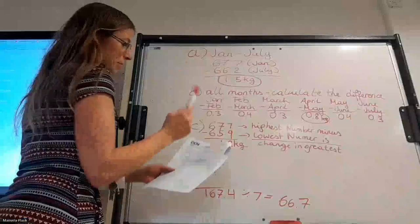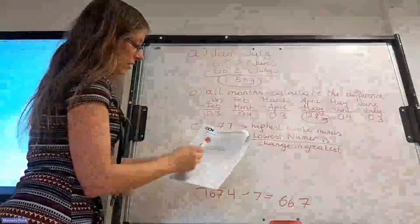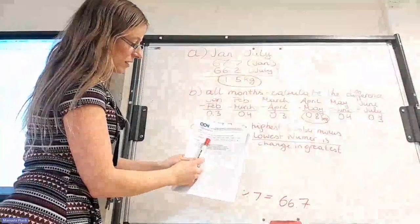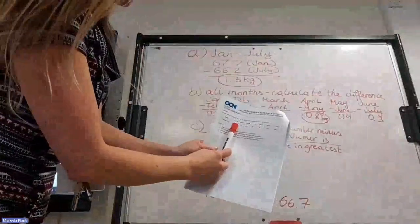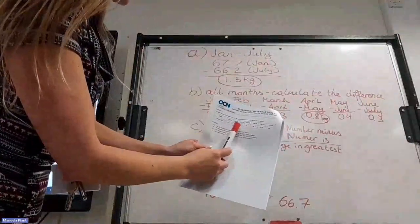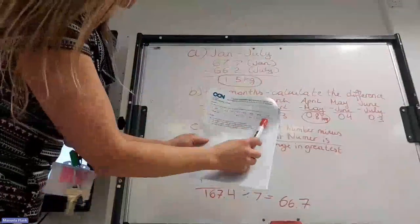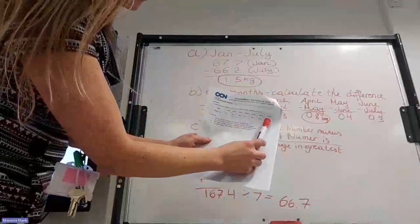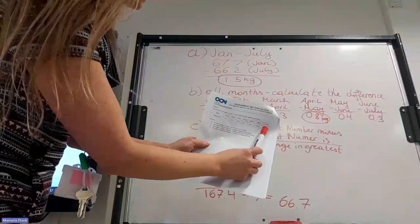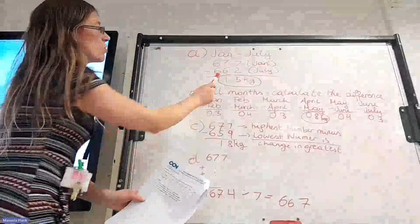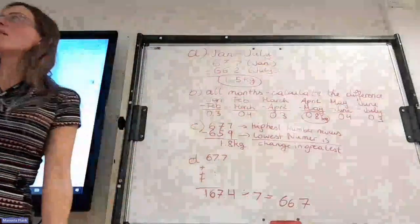And in this case, this person has started over at 67.7 in January. And then in the end now, in July, she weighs 66.2. So she has lost 1.5 kilograms.